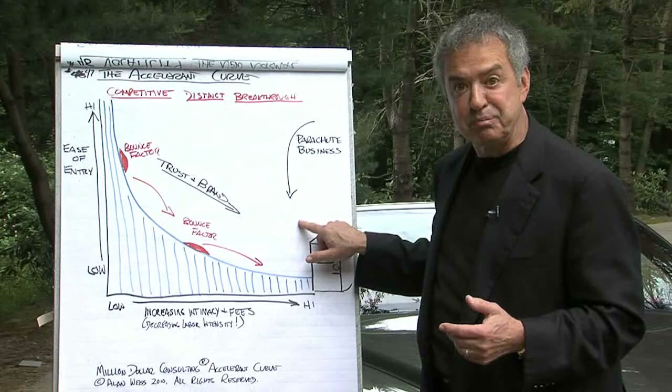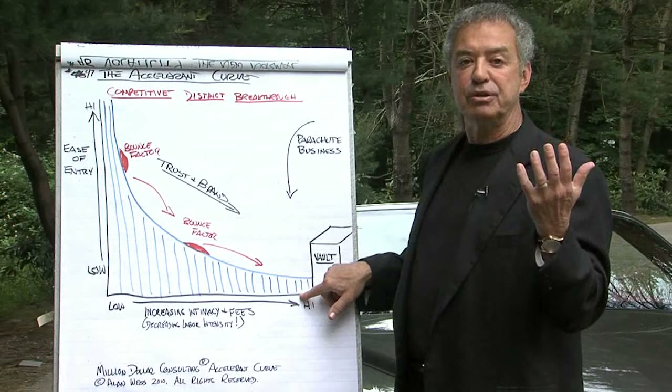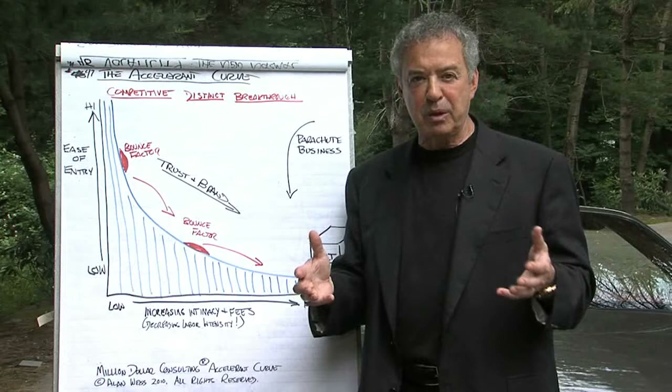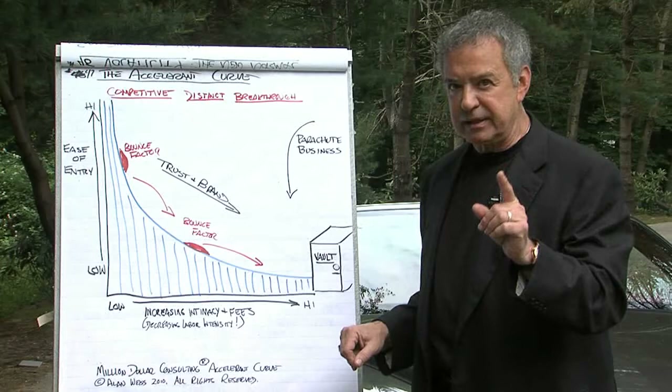If you're successful at this, you get parachute business — and parachute business comes right into the right-hand side of the accelerant curve. Someone hears about you. Your fame is well known. Your niche is well known. Your brand is well known. And they decide instantly to do business with you on a very intimate, high-fee basis.